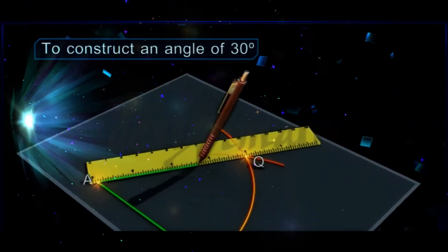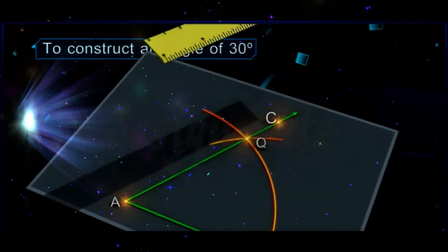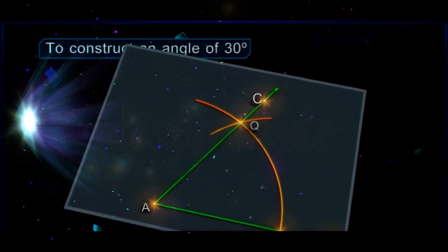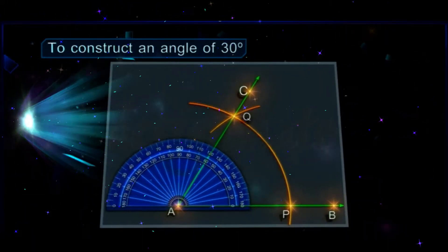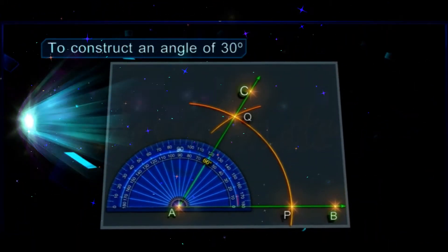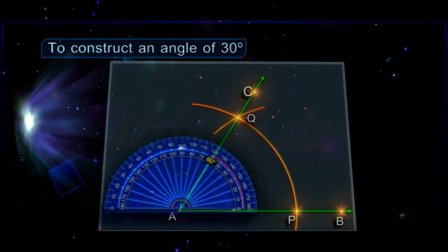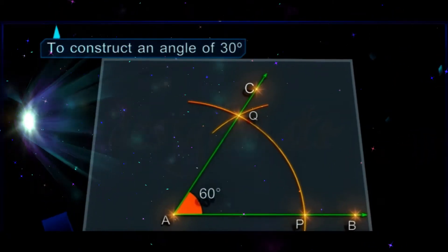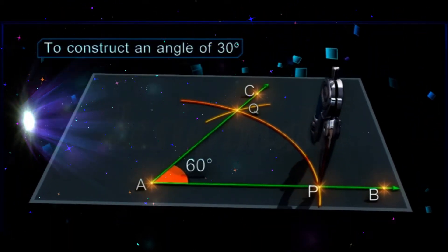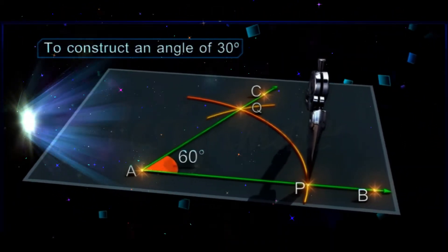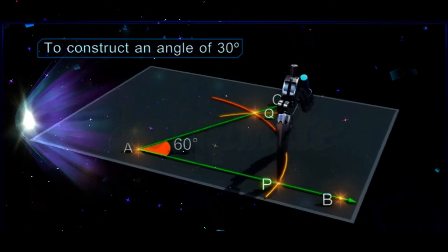Draw ray AQ. Measure angle CAB is equal to 60 degrees. With P as center and any convenient radius more than half of PQ, draw an arc in the interior of the angle.